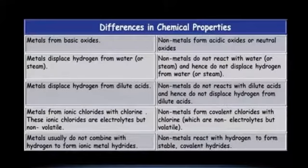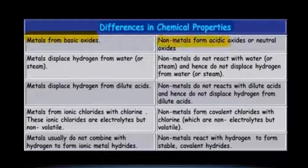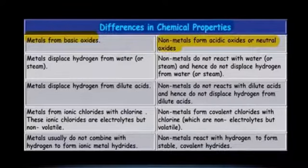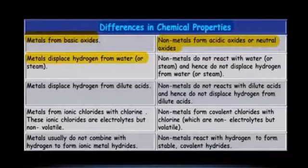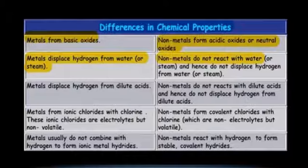We can now generate a table of differences between the chemical properties of metals and non-metals. First property: metals form basic oxides when they react with oxygen, whereas non-metals form acidic oxides or neutral oxides. Second property: metals displace hydrogen from water or steam, but non-metals do not react with water or steam, so they do not displace hydrogen.